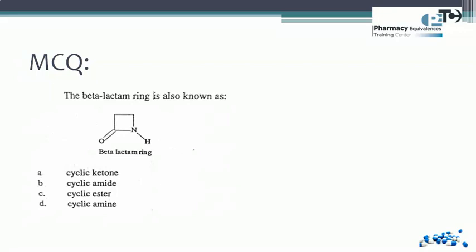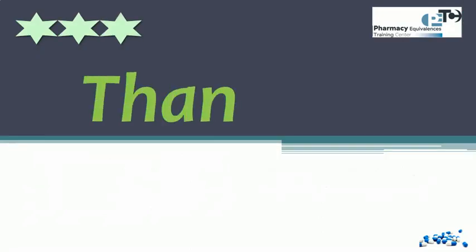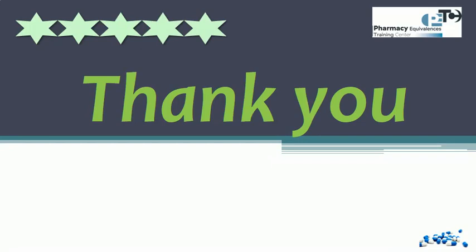Question 3: the beta-lactam ring is also known as what? As discussed in the lecture, this five-membered ring contains nitrogen and is attached to oxygen, forming an amide — so it is a cyclic amide or lactam. Finally, I would like to thank you for attending this first lecture in organic chemistry. Thank you, and see you in the next lecture.